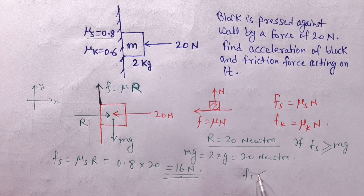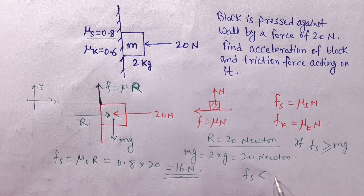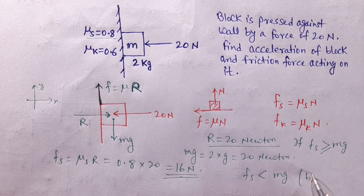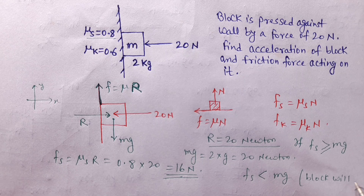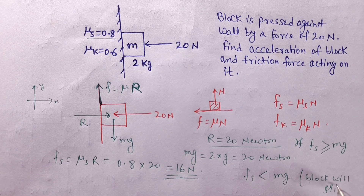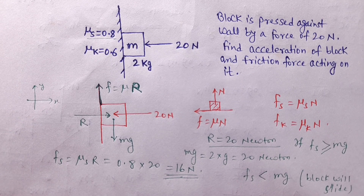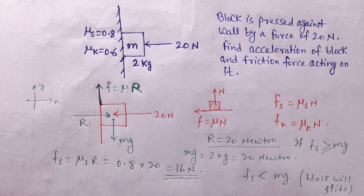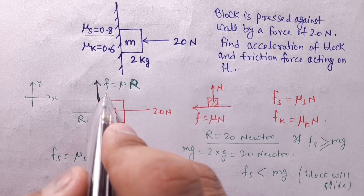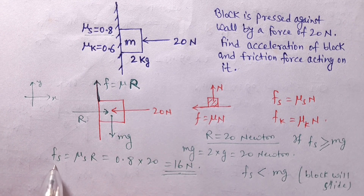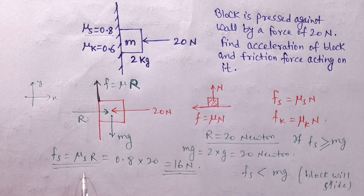The maximum static friction (16N) is less than mg, so the block will slide. Since sliding occurs, we cannot use static friction — we must use kinetic friction.